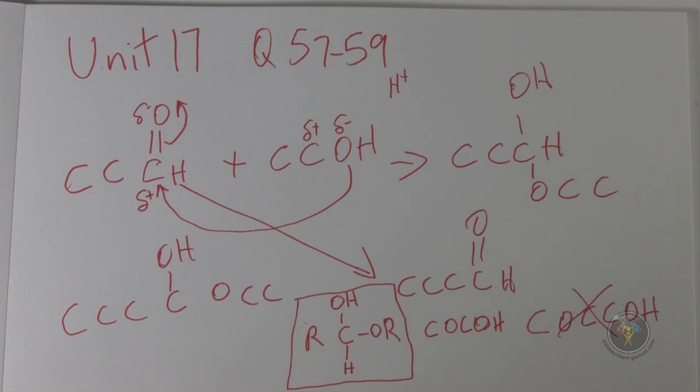And for number three, you can see that the central carbon there where the OH is attached also has an oxygen attached to that carbon, and that is the hemiacetal structure. So therefore we have Roman numeral two and three, which is answer choice D.